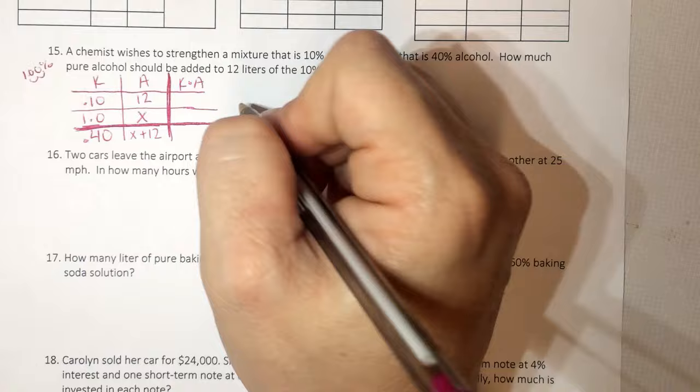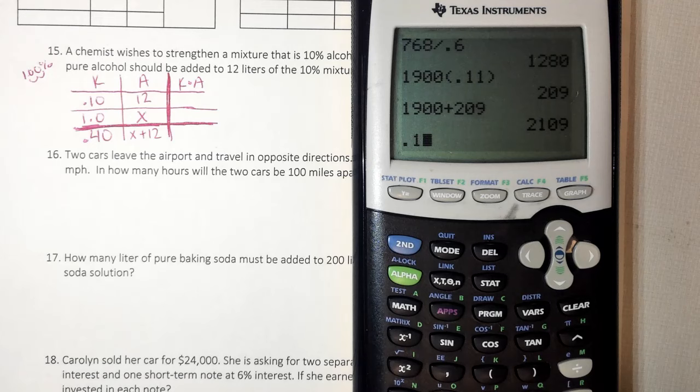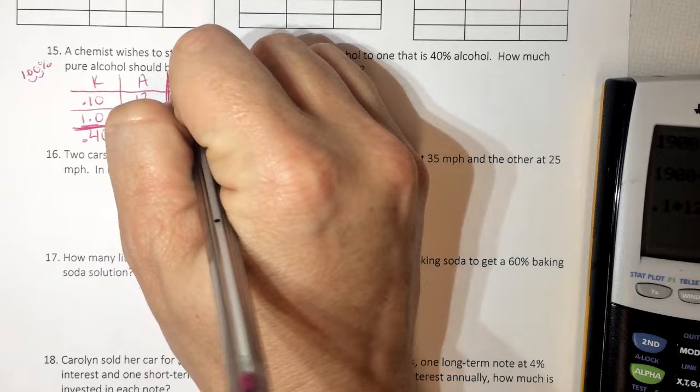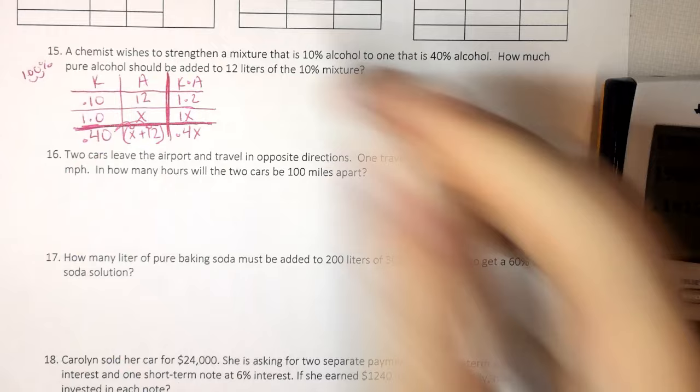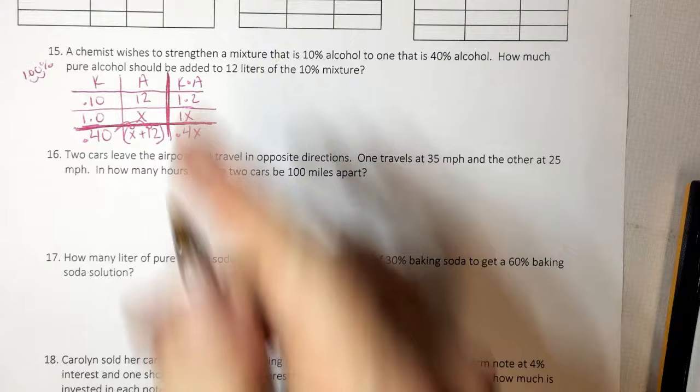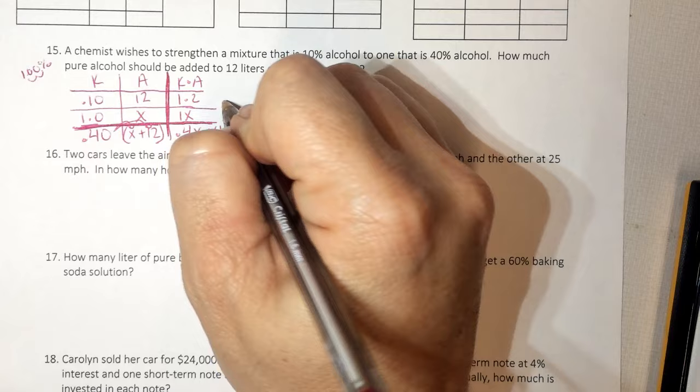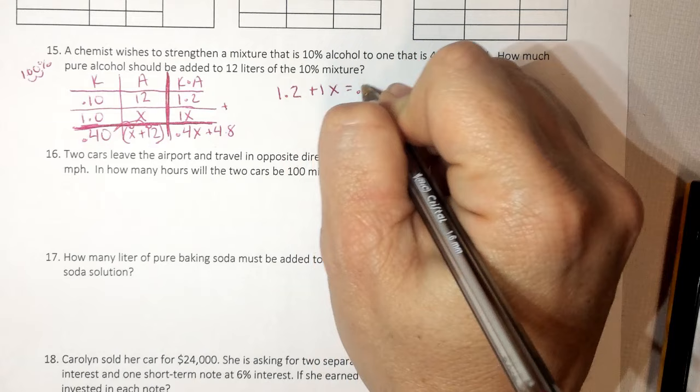That's the hardest part, so now I multiply. So 0.1 times 12 is 1.2. 1 times x is 1x. Here I have to distribute, and I have 0.4 times x, which is 0.4x. And then 0.4 times 12, which is 4.8. And then remember, we set it up the same every single time. So top plus middle equals bottom. So 1.2 plus 1x equals 0.4x plus 4.8.